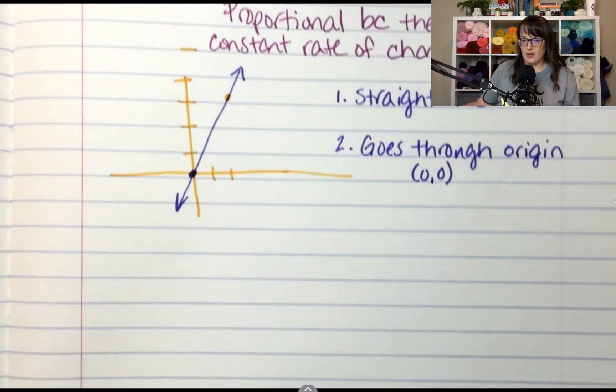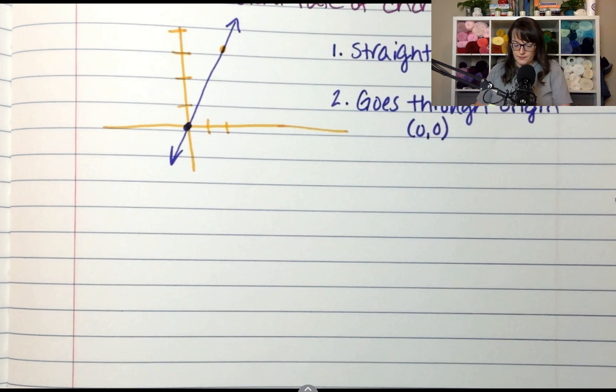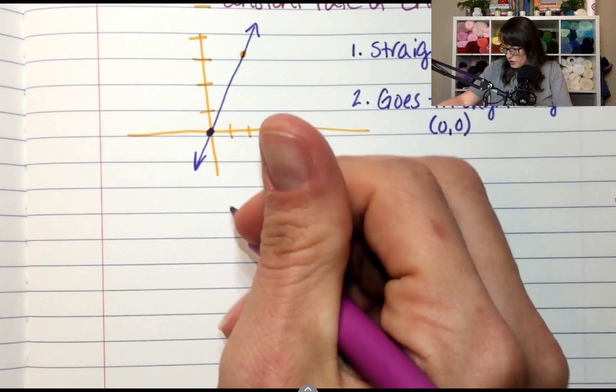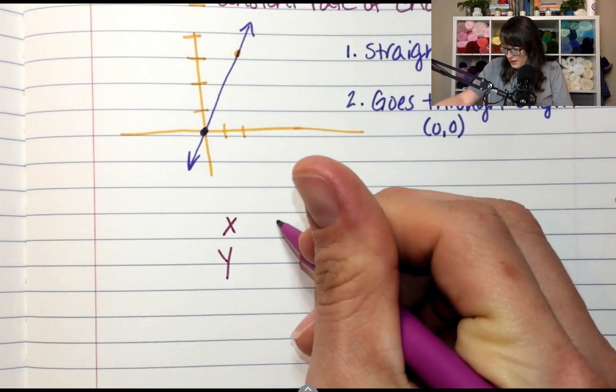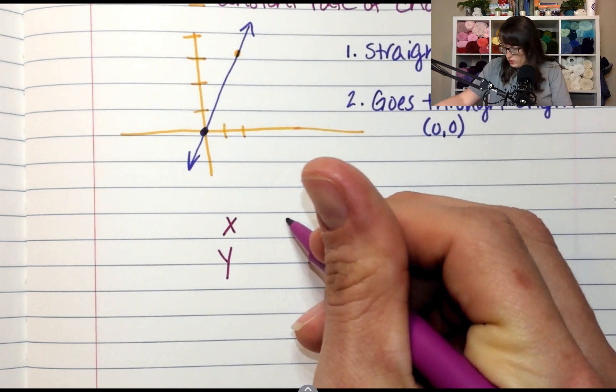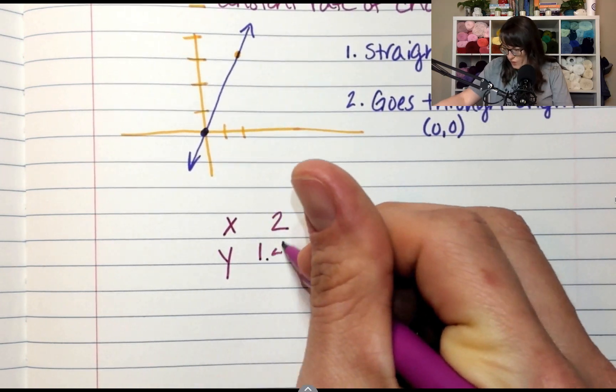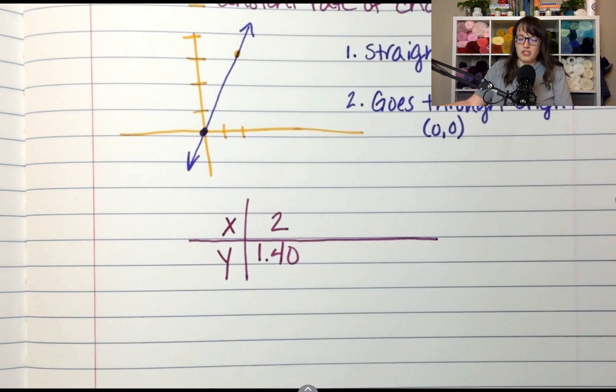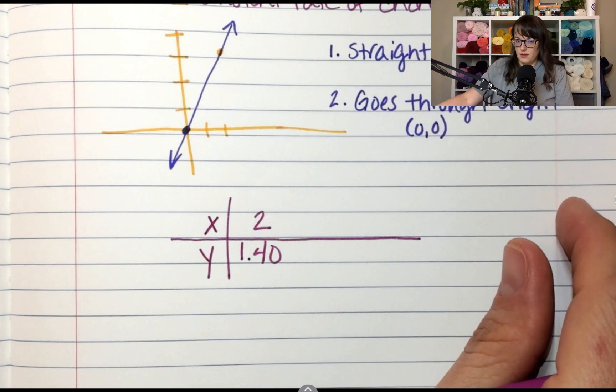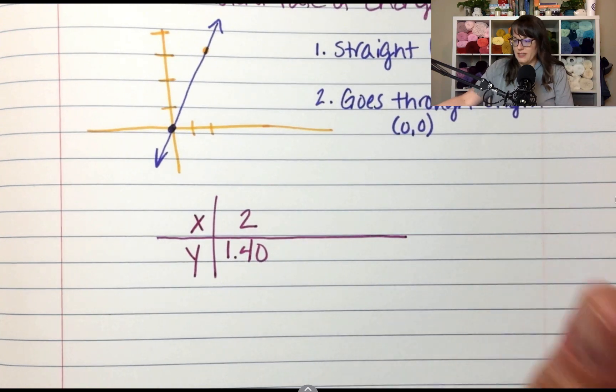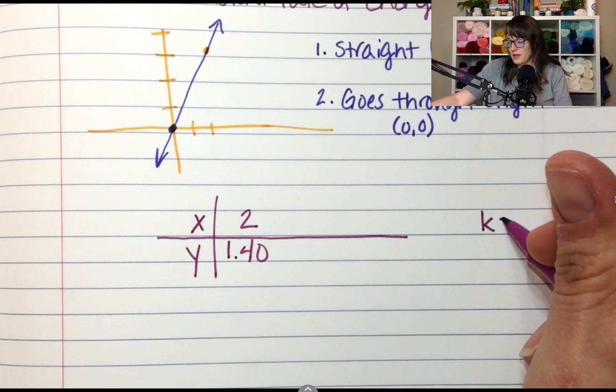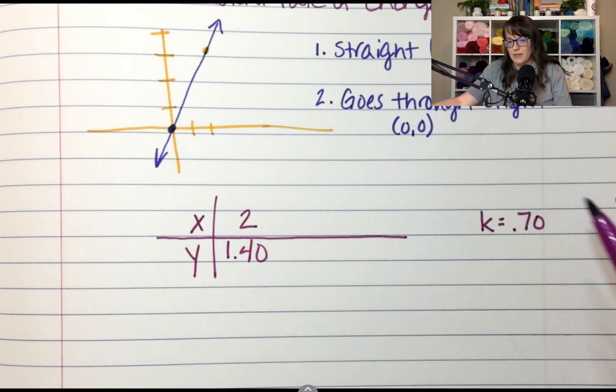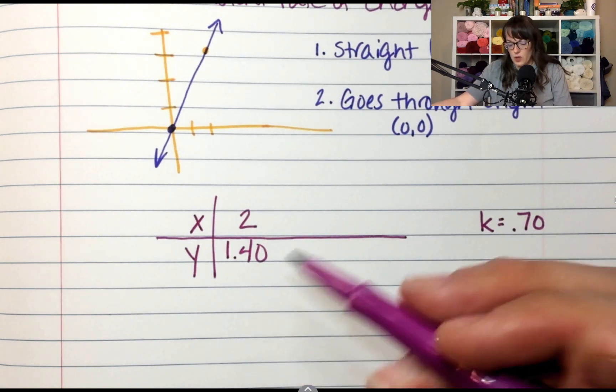All right, let's try another table just for practice. What if I told you that your value was 2, x, y, x is 2 and y is 1.40? How much is k? K would be 70 cents, or 0.70. K equals 0.70 because 2 times 0.7 equals 1.40.